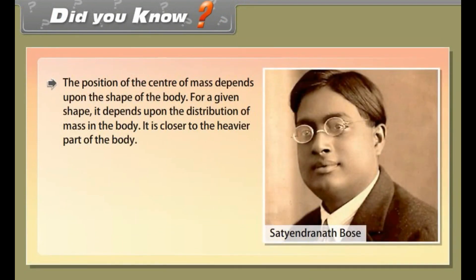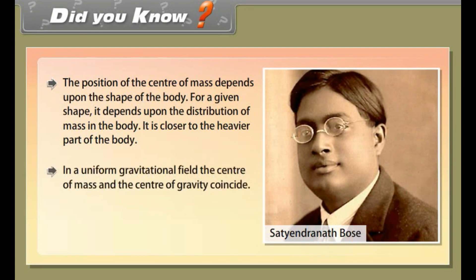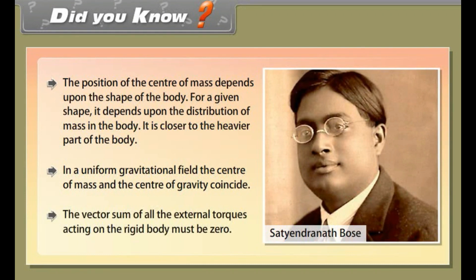The position of the center of mass depends on the shape of the body and the distribution of mass — it is closer to the heavier part. In a uniform gravitational field, the center of mass and center of gravity coincide. The vector sum of all external torques acting on a rigid body in equilibrium must be zero.